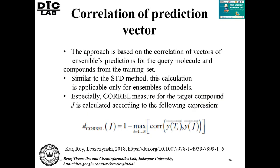Correlation of prediction vector: we can correlate vectors of ensemble predictions for the query molecule and compounds from the training set. Similar to STD, this is based on ensemble prediction. We calculate the chordal value, which is 1 minus the correlation between two vectors. If the correlation between two vectors is high — indicating high degree of similarity — the D-correl value will be low. When the D-correl value is low, the test compound is within the domain.